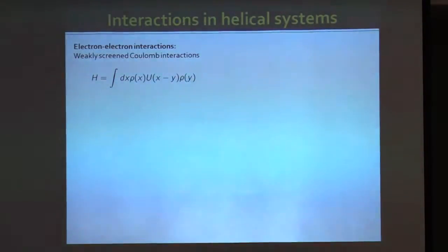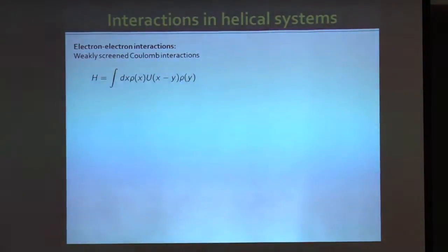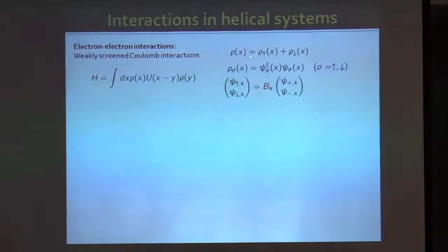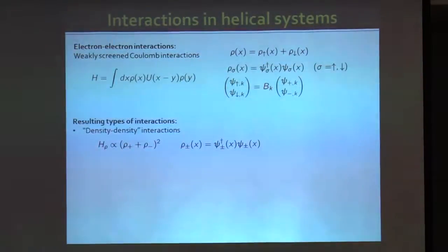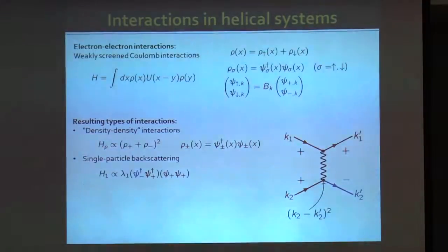In this talk I focus on interactions in helical or generic helical systems. The interaction Hamiltonian is a simple density-density type of interaction, representing weakly-screened Coulomb interactions in the helical edge states. It couples density and density at different positions, where density means spin-up plus spin-down density. Translating to the right-mover and left-mover basis involves the matrix B(k), giving various terms. The simplest term is a pure density-density interaction in terms of right-mover and left-mover densities, i.e., (right-mover density + left-mover density) squared.